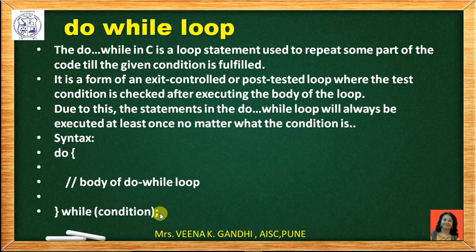In do-while loop, first the body of the statement will be executed, then the termination condition is checked at the end of the body. If it is true, then again the body of the loop will be executed. If it is false, then the loop will be terminated.